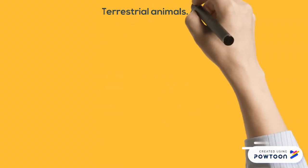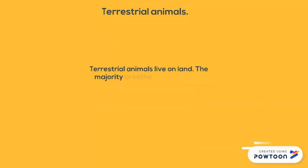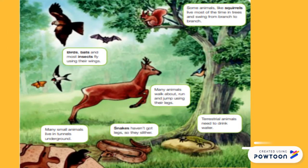And finally, terrestrial animals. Terrestrial animals live on land. The majority breathe in oxygen from the air through lungs. In this drawing you can also see mammals, birds, bats — which is another mammal, a flying mammal. And a very interesting thing is that many animals live in tunnels underground. Also, snakes haven't got legs, for example, they have to slither.